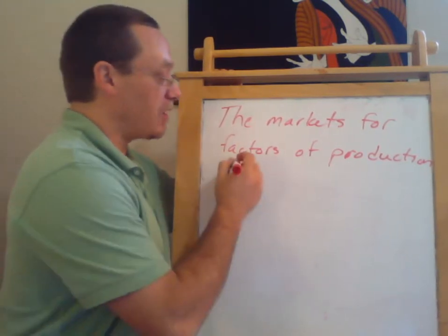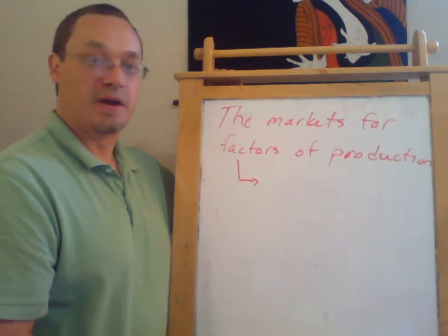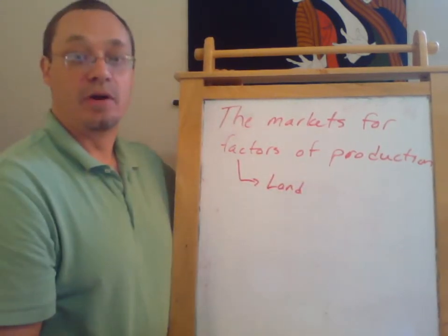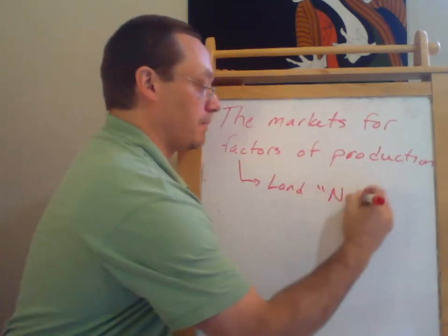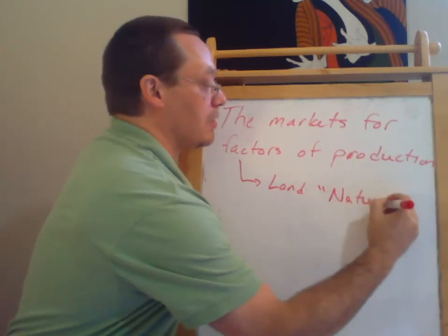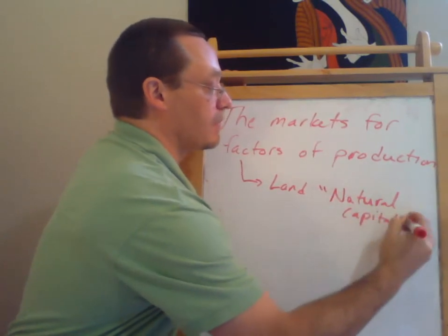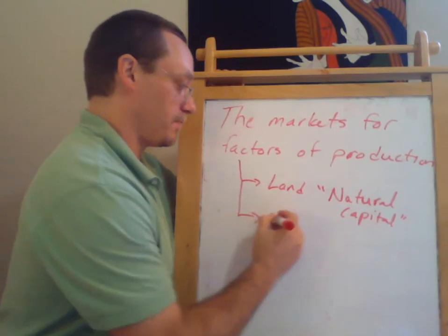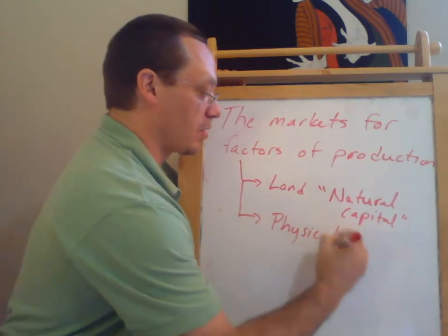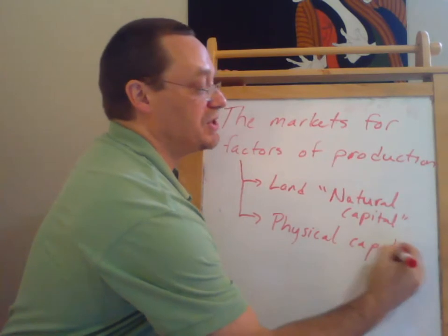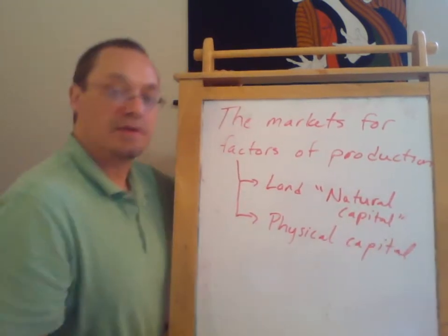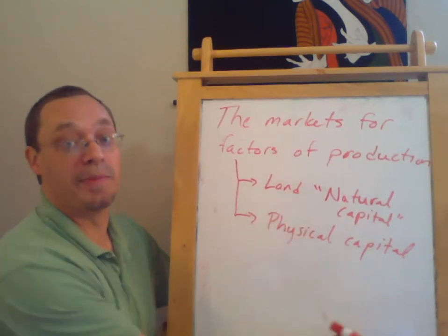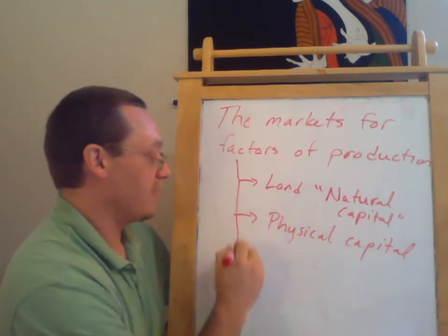Just recall that there are multiple factors of production. There's land, also sometimes called natural capital. There's physical capital — machines, raw materials, inventories of raw materials. Raw materials that are still in the ground would be part of natural capital. And then we have labor.